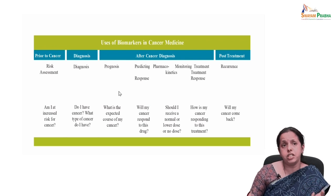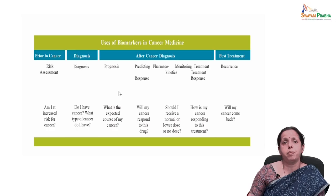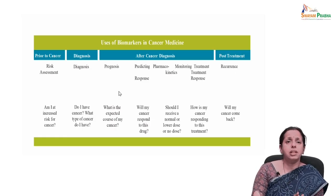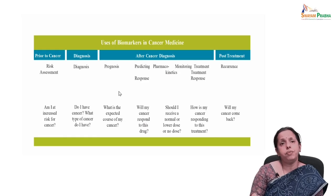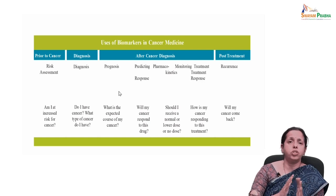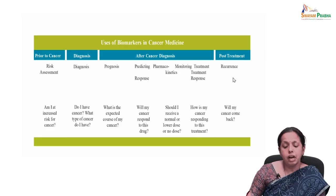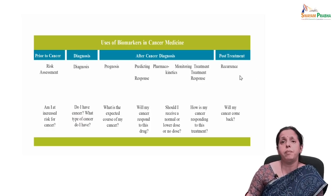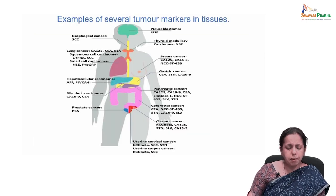For prognosis, certain sets of genes predict a poor outcome for a patient. Predictive biomarkers help determine whether a cancer will respond to a targeted therapy. Pharmacokinetic biomarkers guide whether normal or higher dosing should be used. Post-treatment, biomarkers can predict recurrence — for example, in leukemia and hematological cancers, patients positive for certain gene sets have a high chance of relapse.